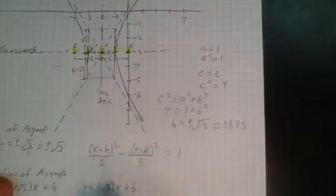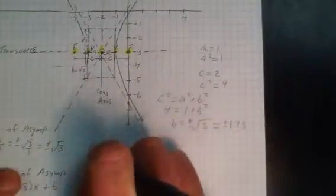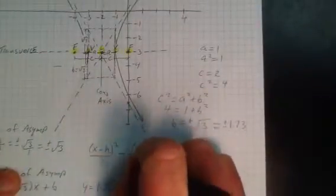So the standard form, kind of jump the gun a little bit right here. I know that I have, let's do this right. So horizontal orientation, so my x squared term is going to be the positive guy, and I'm going to put A squared. And the other one then is going to have the B squared.